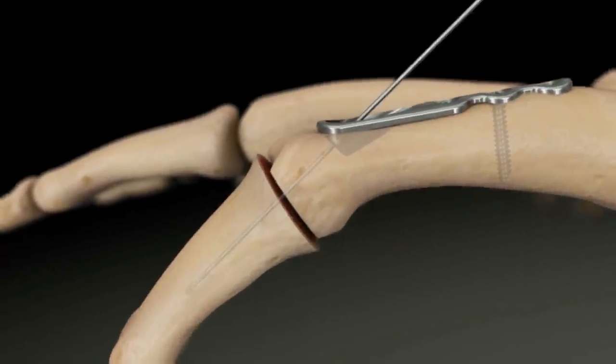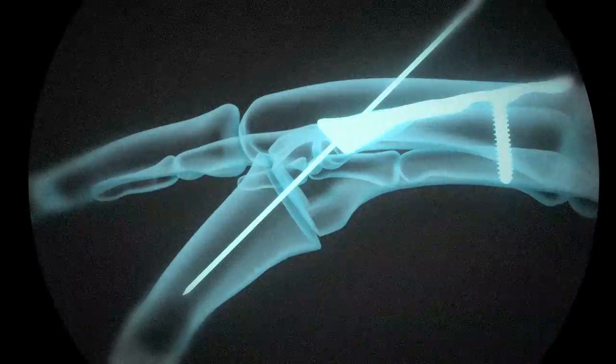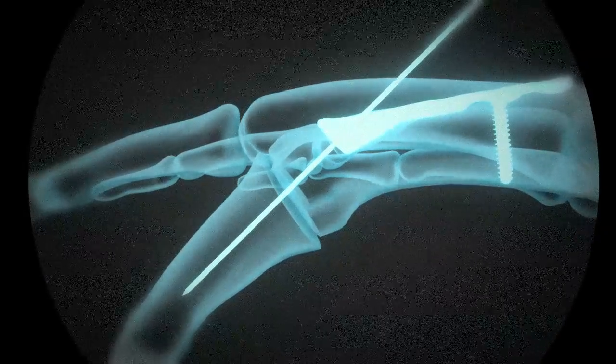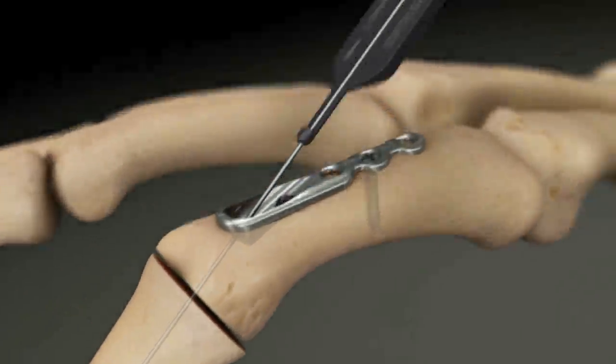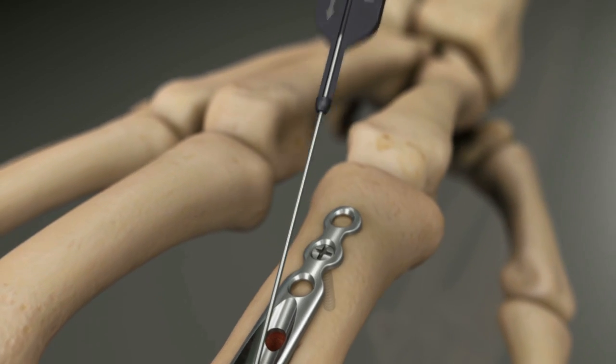Insert a 0.035 K-wire across the joint. Check the angle, positioning, and K-wire depth under fluoroscopy. Measure for the fusion screw by sliding the cannulated depth gauge over the K-wire until the tip reaches the plate.